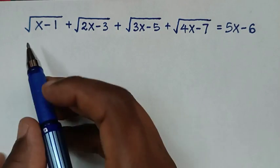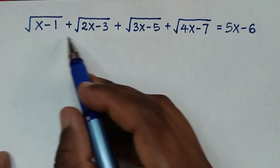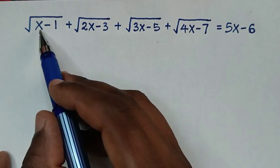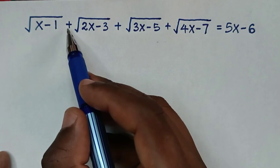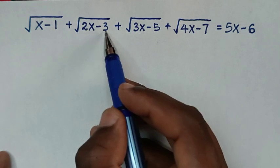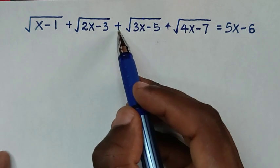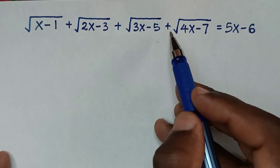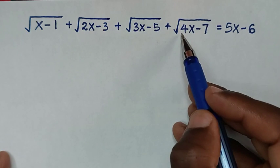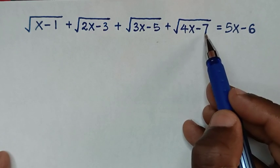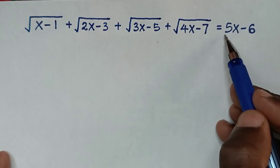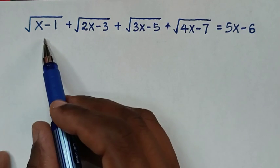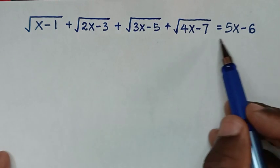Hello, you are welcome to solve this math problem: the square root of x minus 1, plus the square root of 2x minus 3, plus the square root of 3x minus 5, plus the square root of 4x minus 7, is equal to 5x minus 6. We need to find the value of x from this equation.